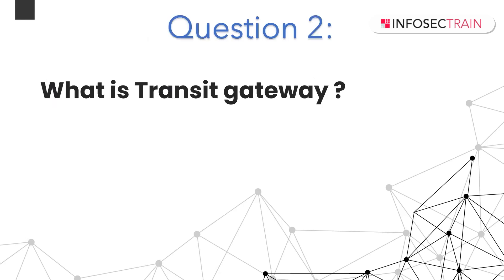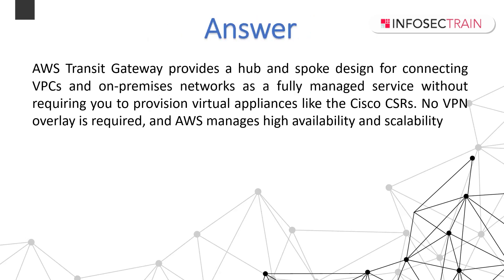What is Transit Gateway? AWS Transit Gateway provides a hub-and-spoke design for connecting VPCs and on-premises networks as a fully managed service, without requiring you to provision virtual appliances like Cisco CSR. No VPN overlay is required, and AWS manages high availability and scalability. Transit Gateway enables customers to connect thousands of VPCs, and controls how traffic is routed among all connected spoke networks using route tables.